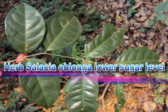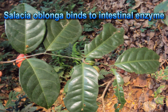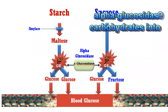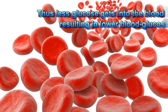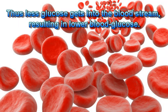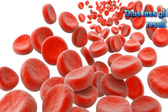Salatia oblonga lowers sugar levels. It binds to intestinal enzyme alpha-glucosidases that break down carbohydrates into glucose in the body. Thus, less glucose gets into the bloodstream, resulting in lower blood glucose.